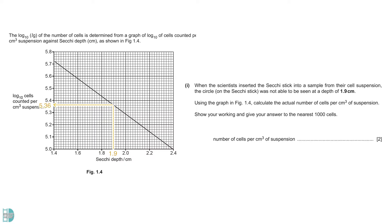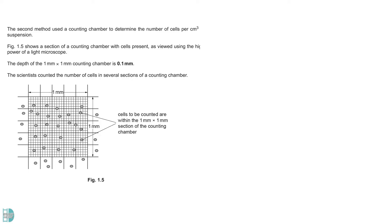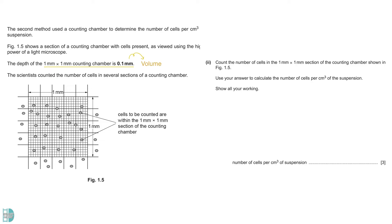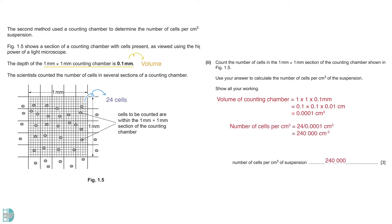Now change the log₁₀ value to a normal value, which is 10 to the power of 5.36. Express this number to the nearest 1000 cells to get the answer. We can also use a counting chamber to determine the number of cells. The chamber shown here is 1 × 1 × 0.1 mm. D2 wants you to calculate the number of cells per cm³ of the suspension. In the diagram, 24 cells fall within the chamber. The volume of the counting chamber can be calculated by multiplying its area and depth. Convert the values to cm, as that is what the answer wants. Dividing the number of cells by the volume gives you the answer.